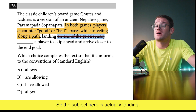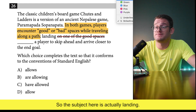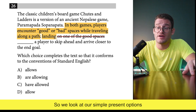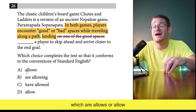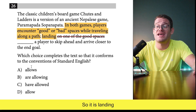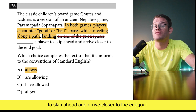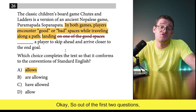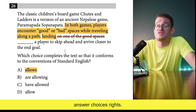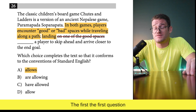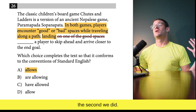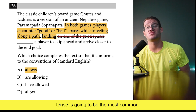If you saw the video on modifying clauses, we have a prepositional phrase: 'landing on one of the good spaces.' The subject here is actually 'landing' — the act of landing is a singular subject. So we look at our simple present options: 'allows' or 'allow.' Because landing is singular, it is 'landing allows a player to skip ahead.' Out of the first two questions we've had two simple present tense answers.